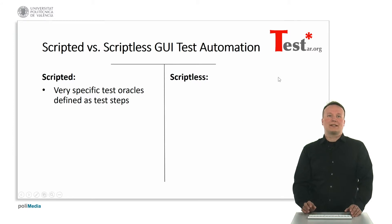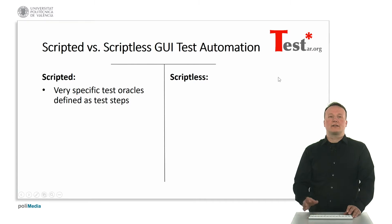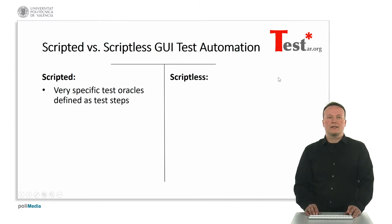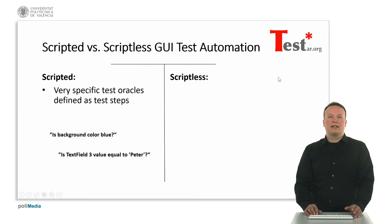In scripted testing the test oracles are very specific and defined as test steps of the test case. For example, one of the oracles could be: is the background color blue? Or is text field 3 value equal to Peter?